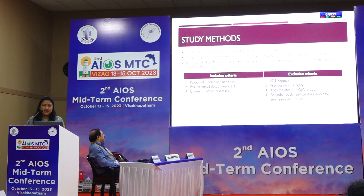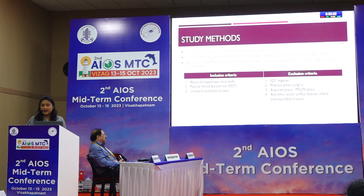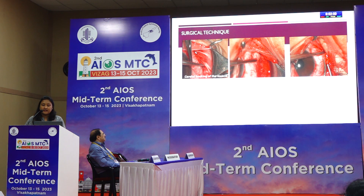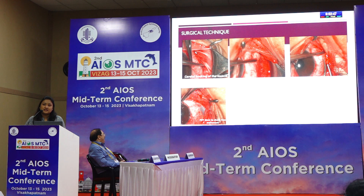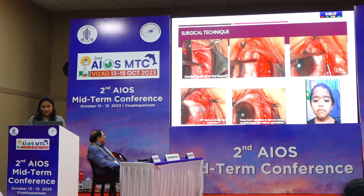Inclusion criteria: ptosis and hypotropia since birth, positive forced duction test (FDT), both unilateral and bilateral cases. Exclusion criteria: FDT negative cases (no restriction), previous ptosis surgery, acquired ptosis, Marcus Gunn jaw-winking ptosis, or any other ocular surface disease or orbital anomaly restricting the eye. Surgical technique involved carefully hooking the muscles — which were fibrosed and posteriorly inserted — followed by careful suturing and cutting. FDT was done at every step to ensure the eye was free, then a hangback recession was performed to avoid scleral perforation.